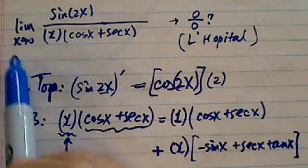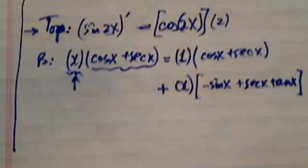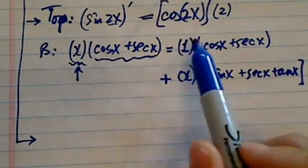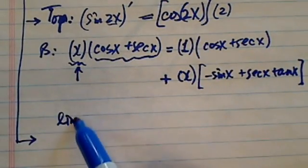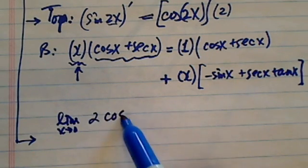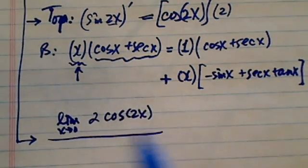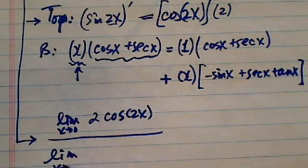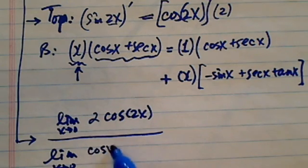So L'Hôpital's rule basically says what we can do is this one is really limit when x to 0. On top, I have 2 cosine of 2x. On the bottom, I have limit of x approach to 0 of this whole mess I have. I have cosine of x.